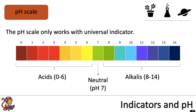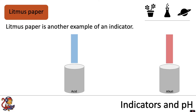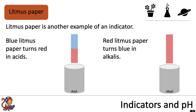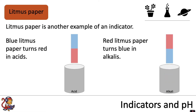But there are other different indicators that you can use. Litmus paper is another example of an indicator, and you can get two different types: blue litmus paper and red litmus paper. Blue litmus paper turns red in acids, so if you put one into an acid it would turn red and you know that that solution is acidic. And red litmus paper turns blue in alkalis, so put that into an alkali and it will turn blue.